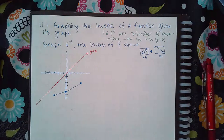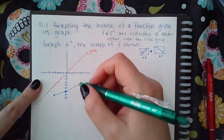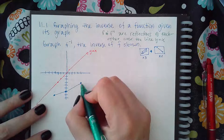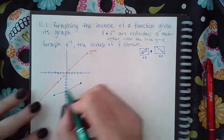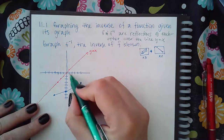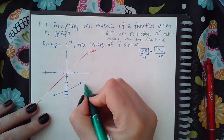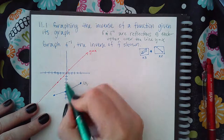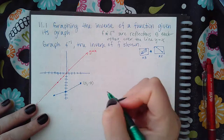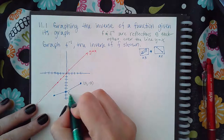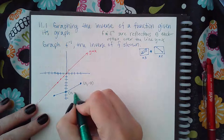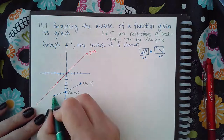If I'm drawing the inverse, it should be a mirror image over this line. But how do I find it? You literally just need to label each of these points and then interchange their x and y coordinates. So this point is x equals 5 and y equals negative 3. The coordinates of this point are x equals 0 and y equals negative 6.